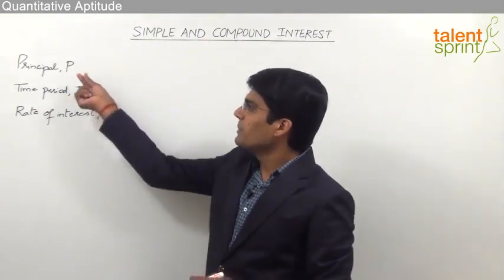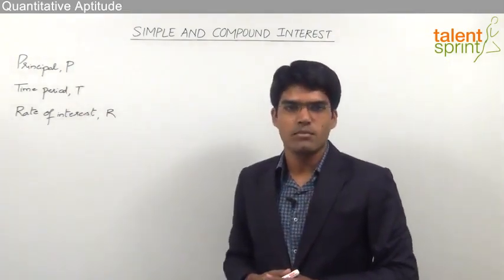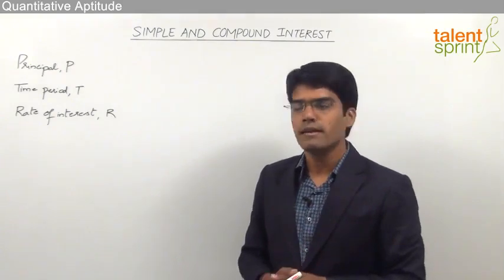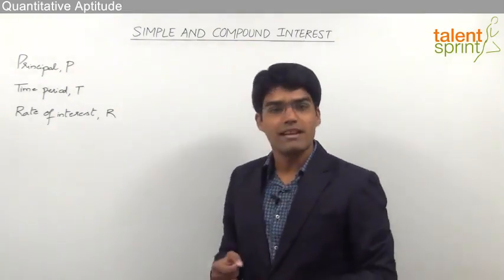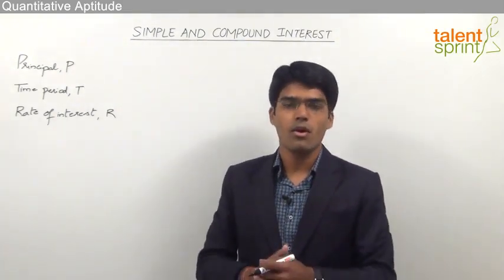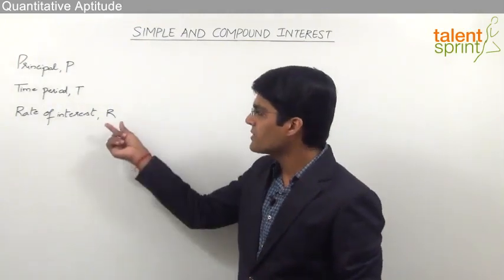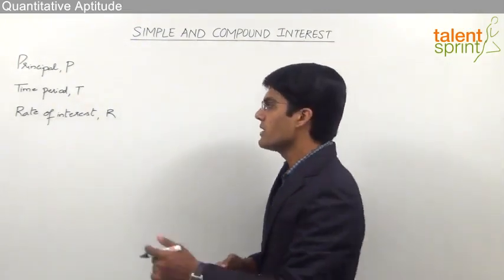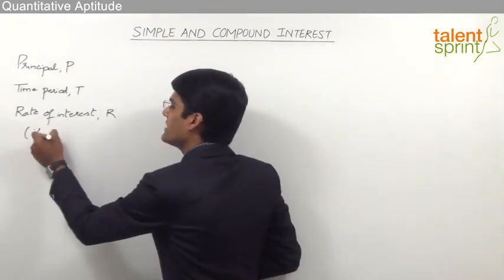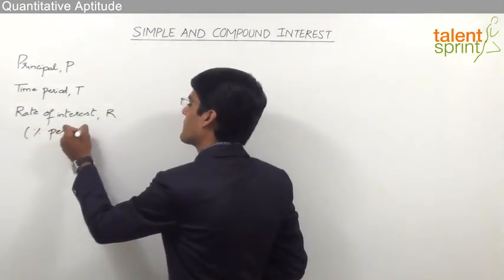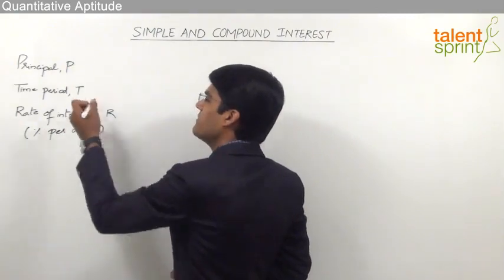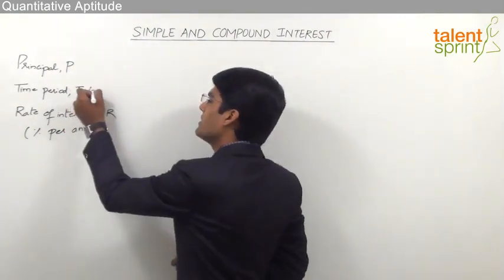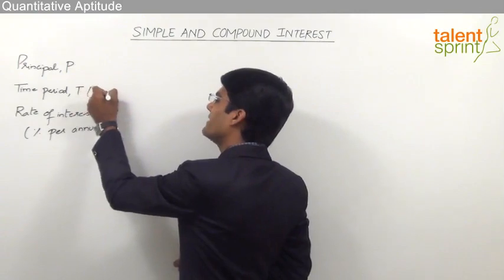To summarize: P is the principal amount which has been borrowed or lent; T is the time period for which the amount has been borrowed or lent; and R is the rate of interest, calculated in terms of percentage per annum. The rate of interest should always be in percentage per annum, and the time period should always be in terms of years.